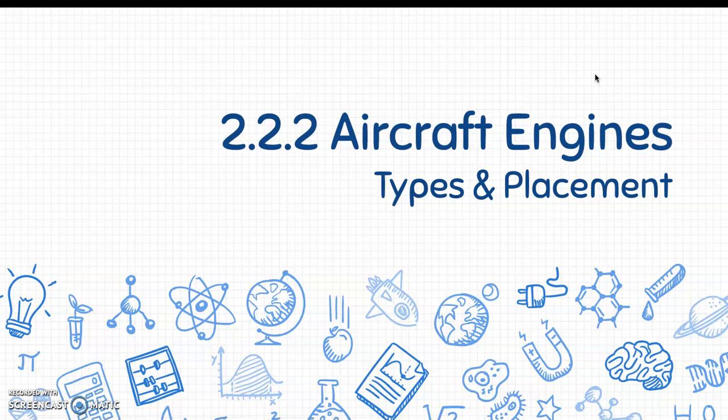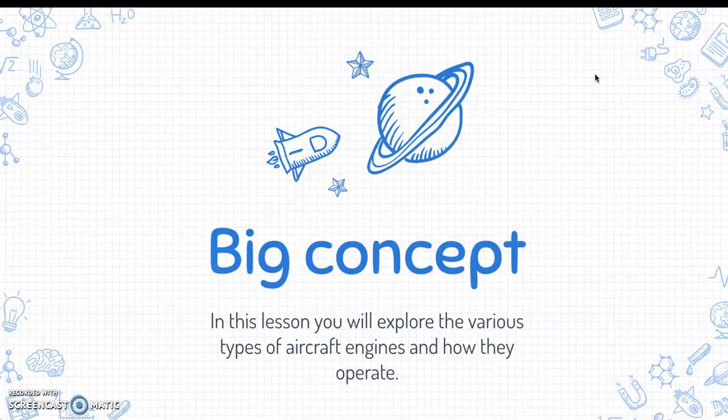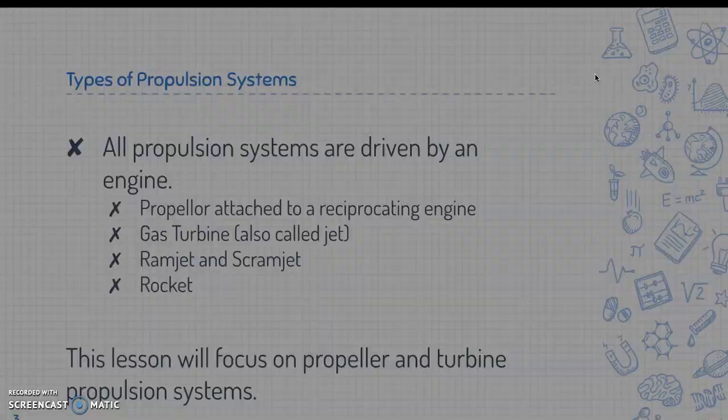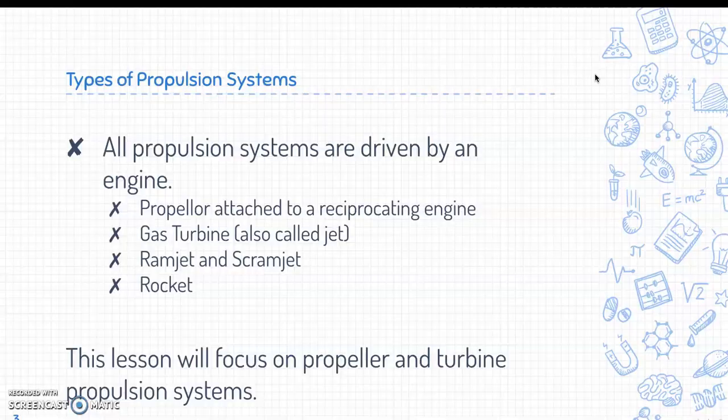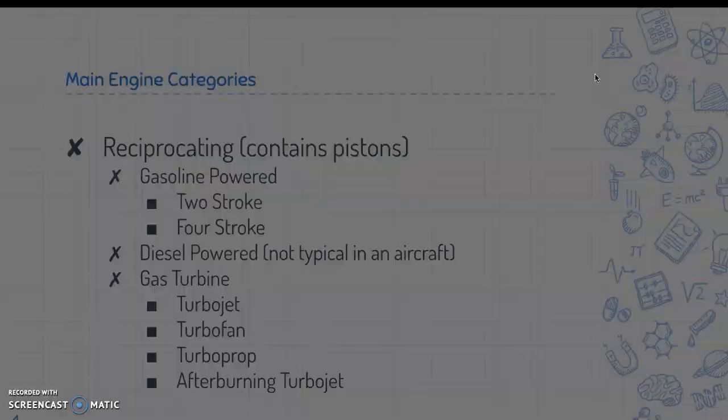This lesson is 2.2.2 Aircraft Engines, focusing on the types and their placement. The big concept is that you will explore the various types of aircraft engines, how they operate, and their placement on aircraft. All propulsion systems are driven by an engine — they can be a propeller attached to a reciprocating engine, a gas turbine (also called jet), ramjet, scramjet, or rocket. This lesson will focus on propeller and turbine propulsion systems specifically.